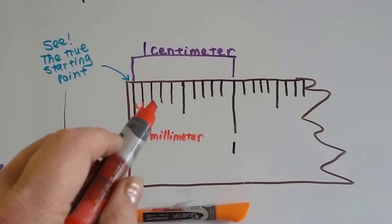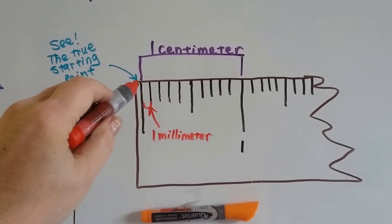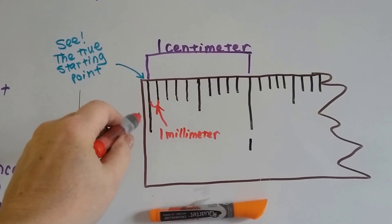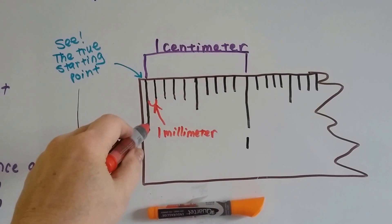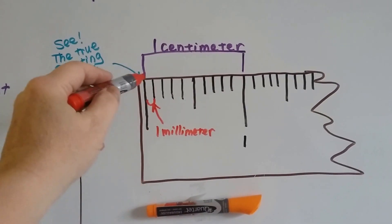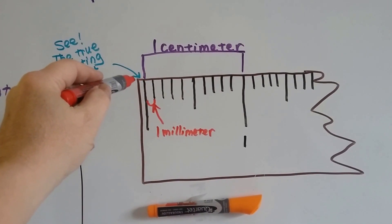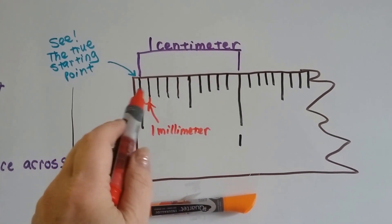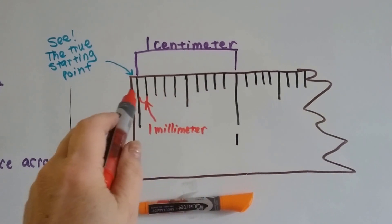Even for millimeters and centimeters, there's a starting line. You don't use the edge of the ruler. You use the starting line. So the centimeter starts here, not here. This tiny little space is one millimeter, and then this is one centimeter.